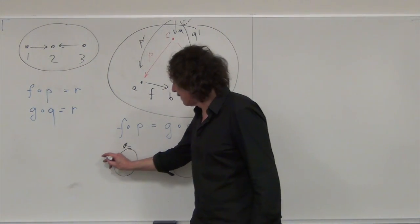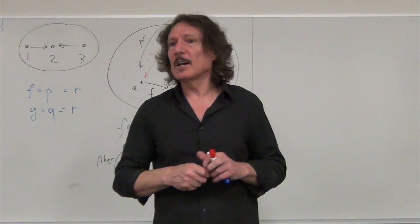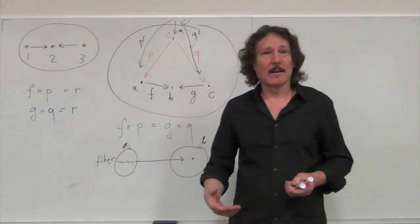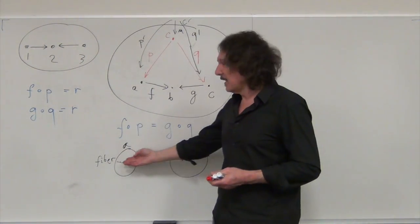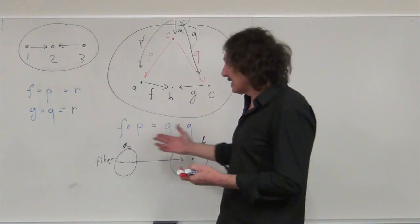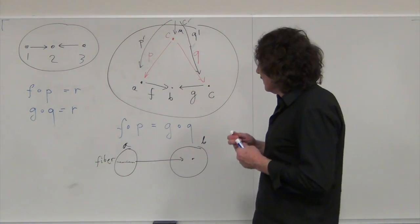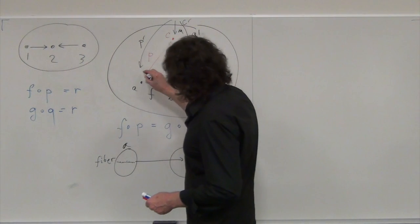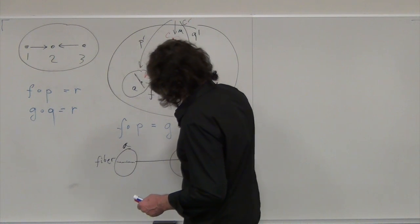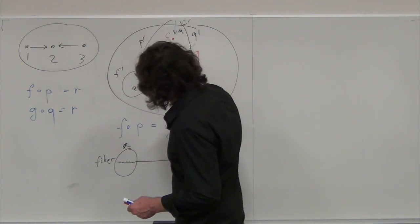The clever thing mathematicians do is say: I cannot invert the function, but I can define a counter-image of each point — it will be a set. So if I have a function F that takes a bunch of elements and maps them into one element, this bunch of elements mapped to the same element is called a fiber.